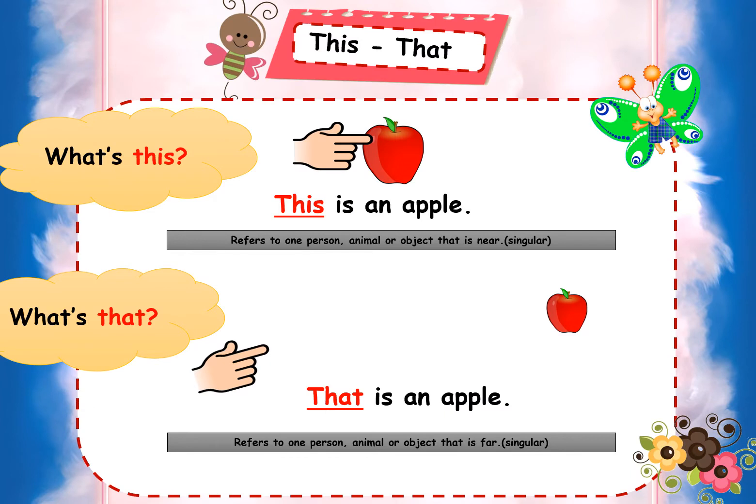Now we come to another part of the lesson — the difference between 'this' and 'that.' 'This' is used for near objects — for something close, we say 'this.' What is this? 'This is an apple.' 'That' is used for far objects — something far, we say 'that.' What is that? That is an apple.